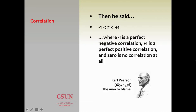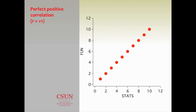He suggested that this correlation should be between negative one and one. A correlation of zero is no correlation at all. A correlation of positive one is a perfect positive correlation, and a correlation of negative one is a perfect negative correlation.